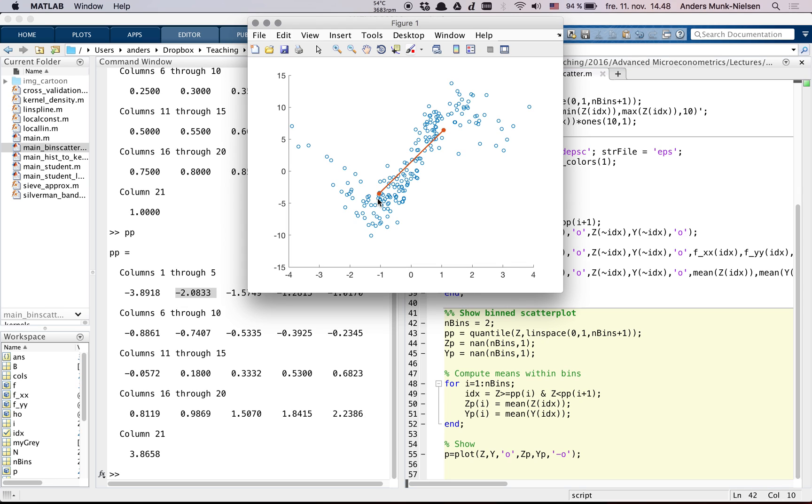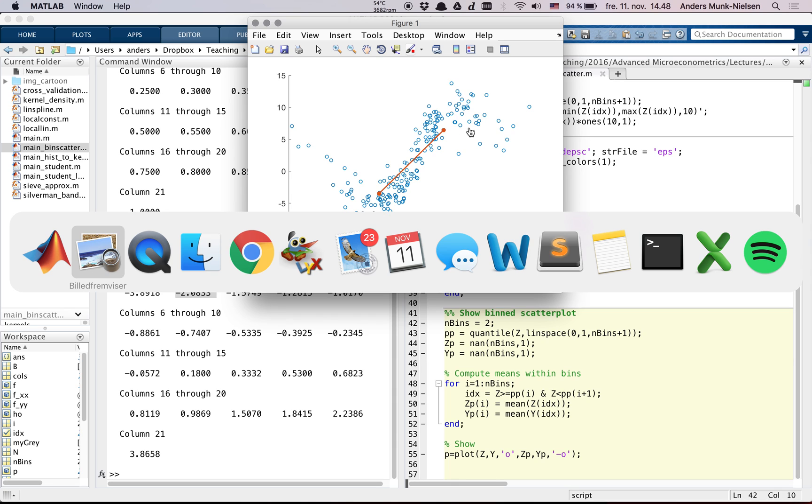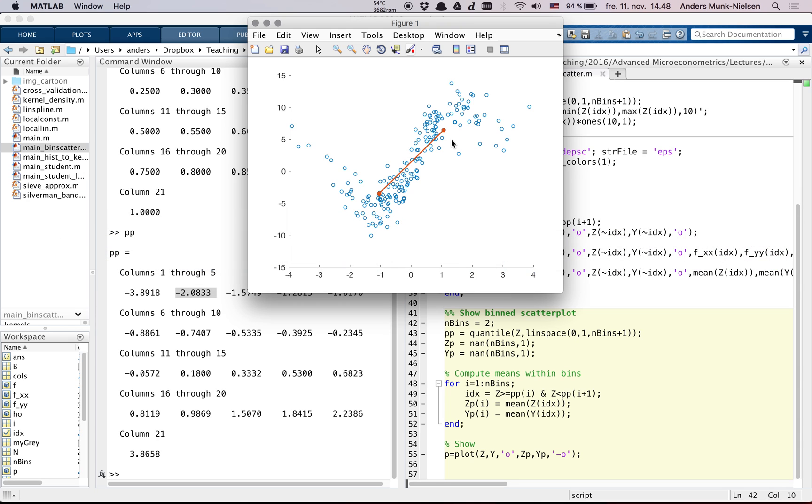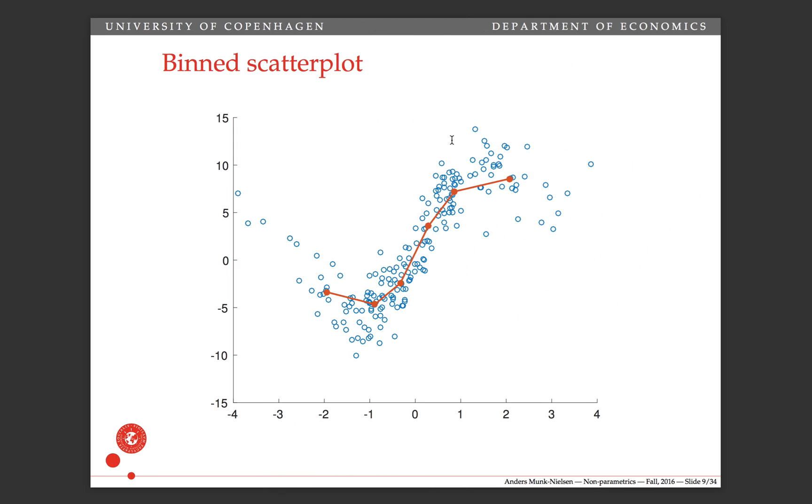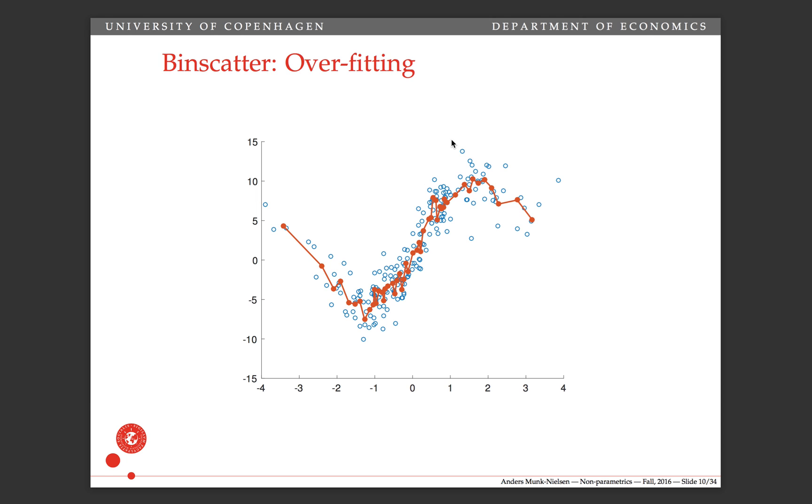This one has way too little variation, that's just a linear relationship, so that's perhaps too inflexible. That's the sense in which there's a bias-variance trade-off here as well as in density estimation. Here you have what's called overfitting when we have too many bins, and this is underfitting when we have too few bins.